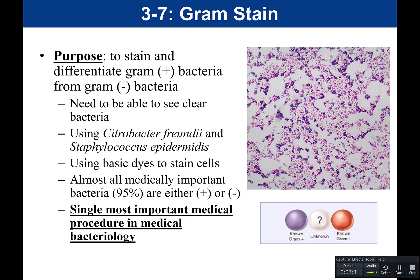One of these organisms is going to be gram-positive and one is going to be gram-negative. In the gram stain, we use basic dyes to stain the cell. A basic dye accepts hydrogen ions, making the oxychrome positively charged, which is attracted to the negatively charged cell. The two dyes used are crystal violet, which stains cells purple, and safranin, which stains cells a pinkish-red. Gram-positive will end up purple and gram-negative will end up red.